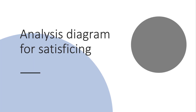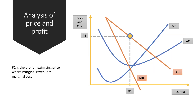Let's work through step by step a possible satisficing analysis diagram, which you'll need to use if you want to get top marks for analysis. Here's a firm with a downward sloping demand curve, AR and MR. If they were a maximising firm, they would maximise profits where marginal cost intersects with marginal revenue. That gives output Q1 and price P1. An alternative is not to charge P1 but to choose a satisficing price.